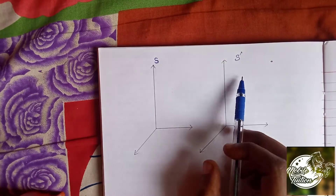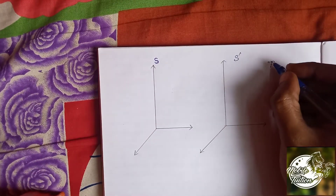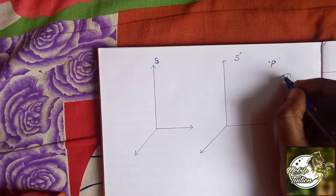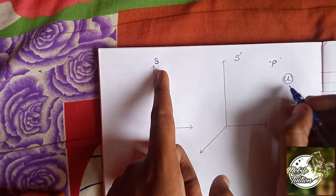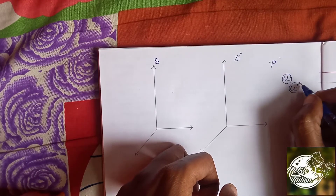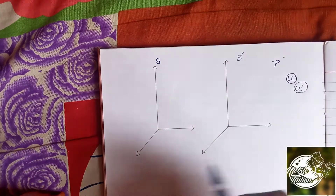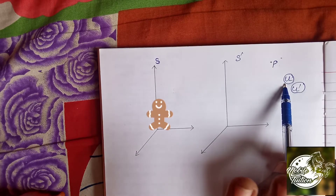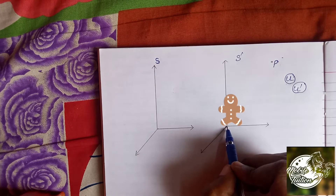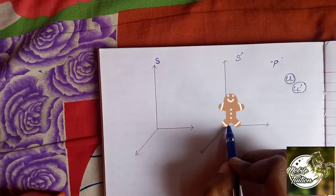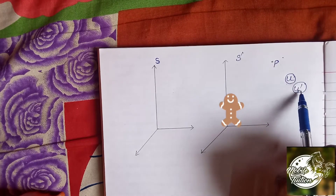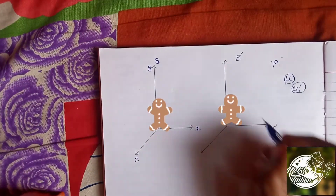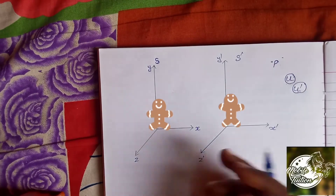S system and S' system — there are two inertial frames. One particle is moving. The velocity is U. Let's say U. So in the S' system, U is in the S' system. So with respect to the observer, the velocity is U in the S' system. In this system, we can see the observer's velocity is u'. So we can see the xyz, x', y', z'. Okay, fine.